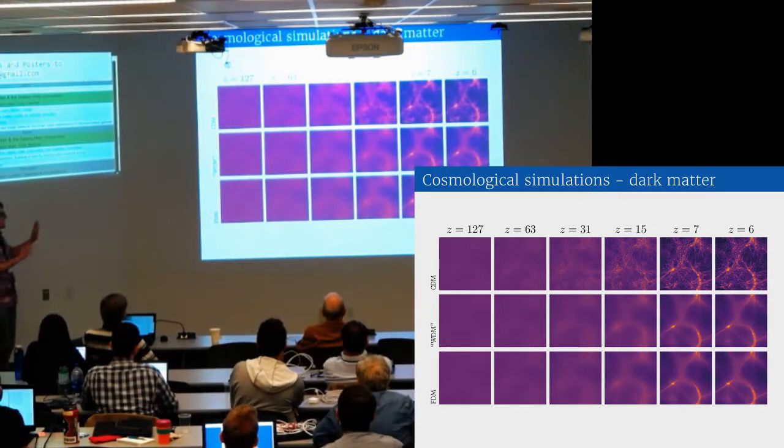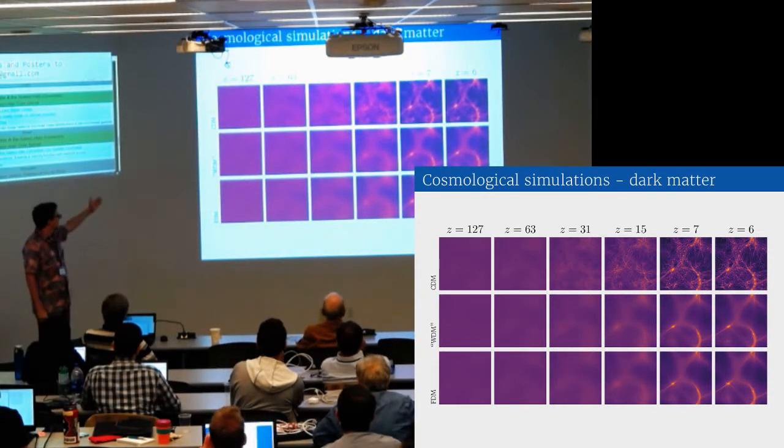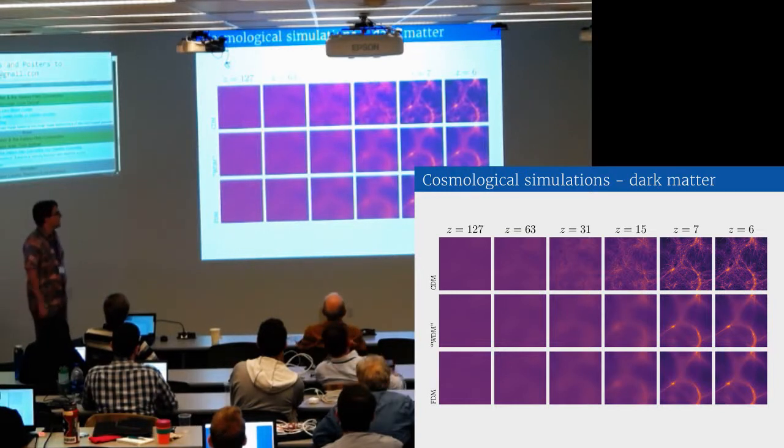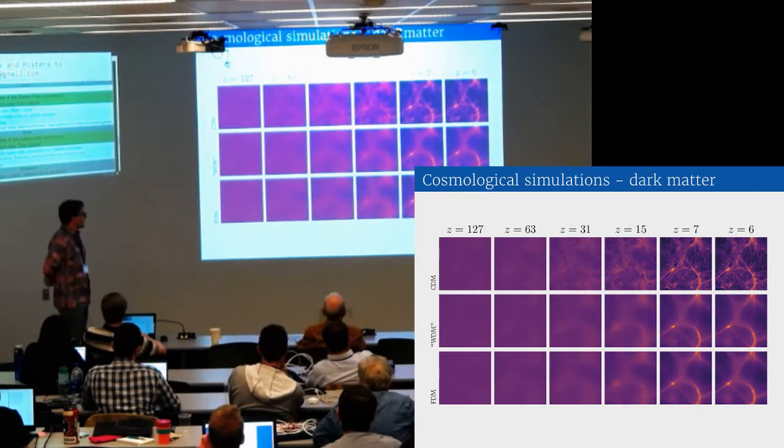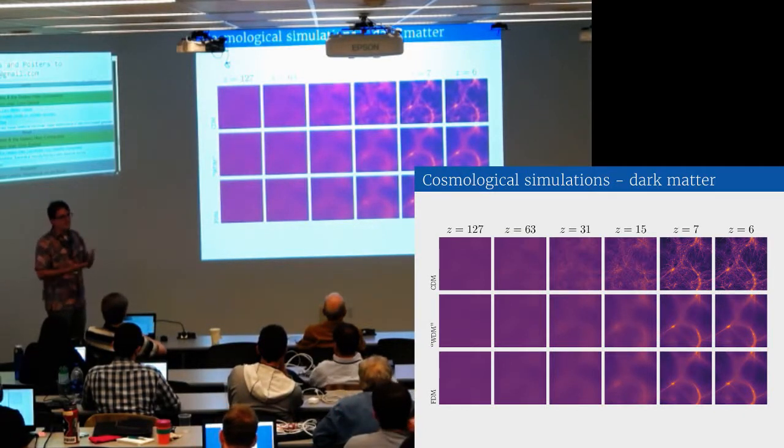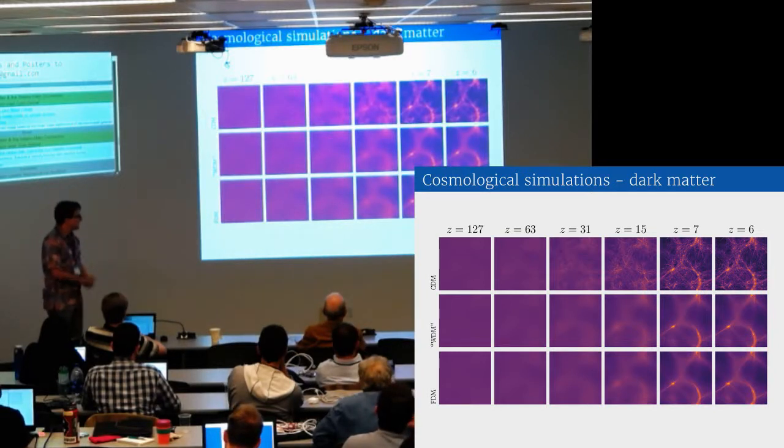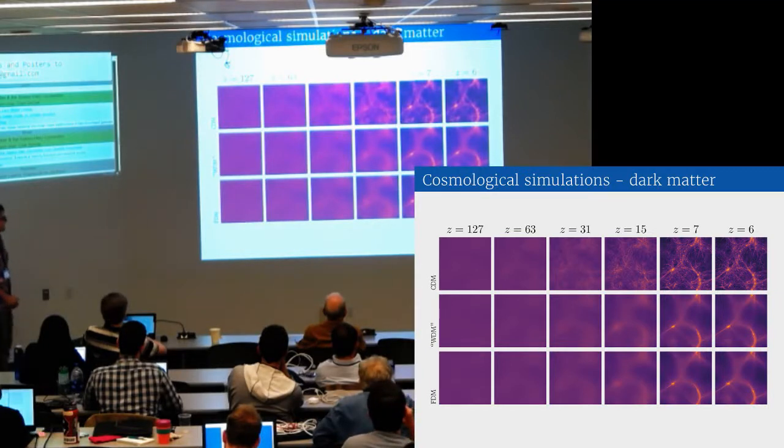To highlight the big picture, we are comparing fuzzy dark matter, warm dark matter, and cold dark matter. I'm evolving it to redshift 6. Cold dark matter, it's scale-free. You form subhalos on all scales in the cosmic filaments. With warm dark matter and fuzzy dark matter, you've introduced a cut off in your initial power spectrum, so you don't form halos below a minimum mass. That's why you have erased a lot of the structure. On large scales like this, they look very similar.